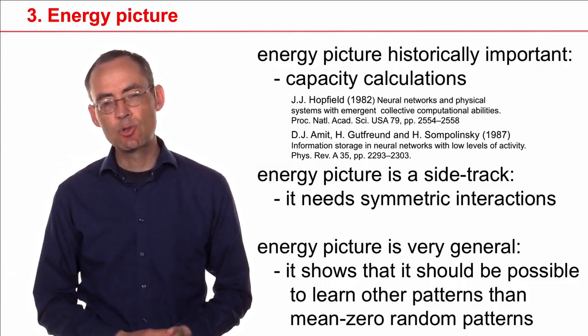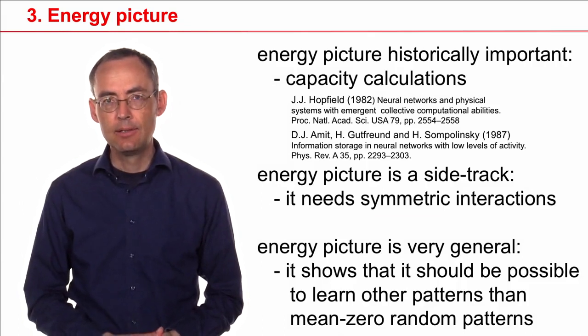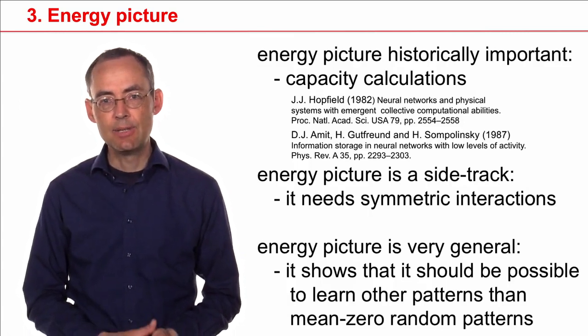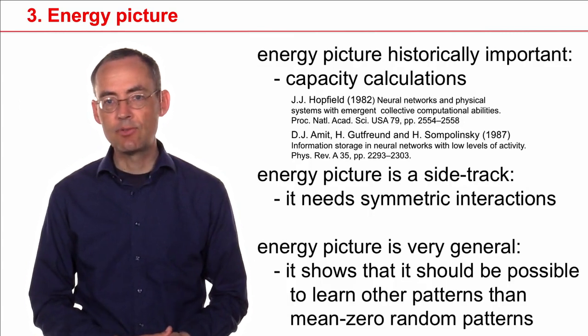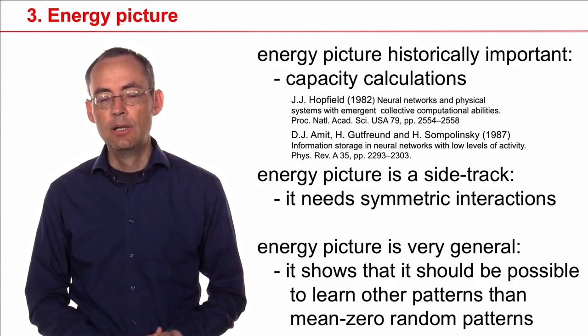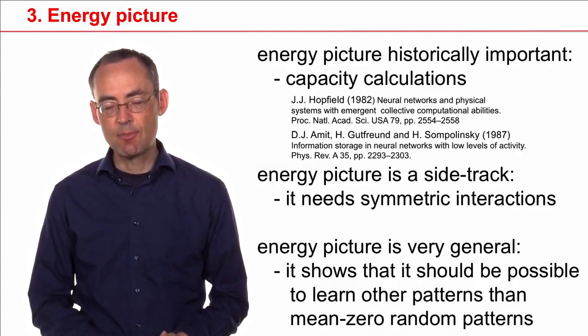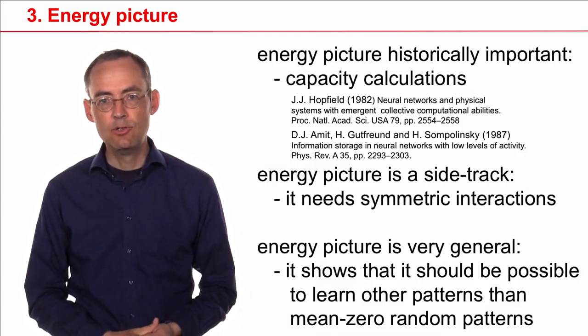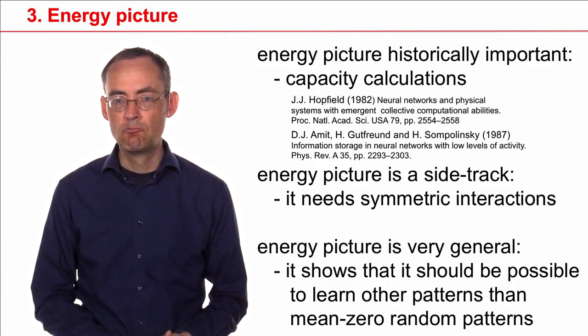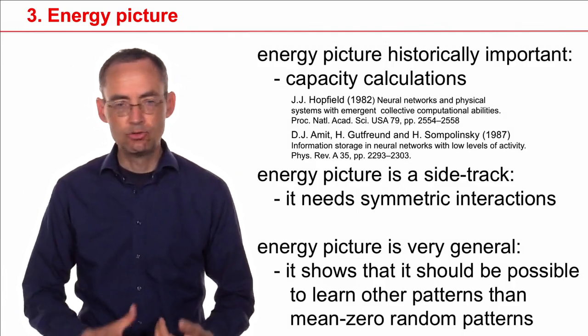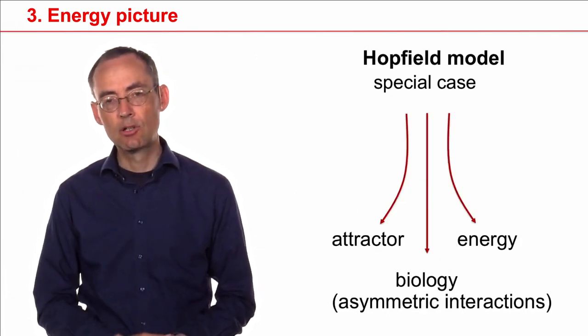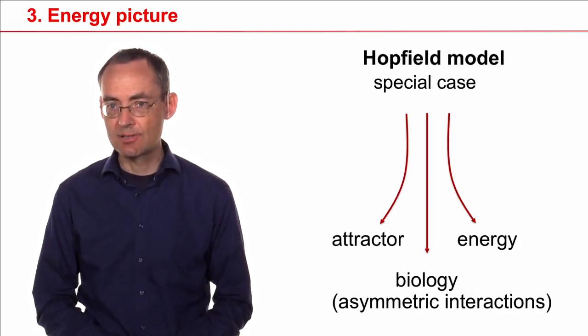On the other hand, the energy picture sort of is a sidetrack. It needs symmetric interactions, but we don't have symmetric interactions in biology. It has been used for many calculations, but it turns out that some of the calculations you can redo without the energy picture. However, the energy picture suggests that there is something very general. Interacting neurons in a network can move towards fixed points even if we don't have random patterns which exactly have a mean zero of the activity. So, there is something generic going on, and that's what we are going to exploit in the next sections.